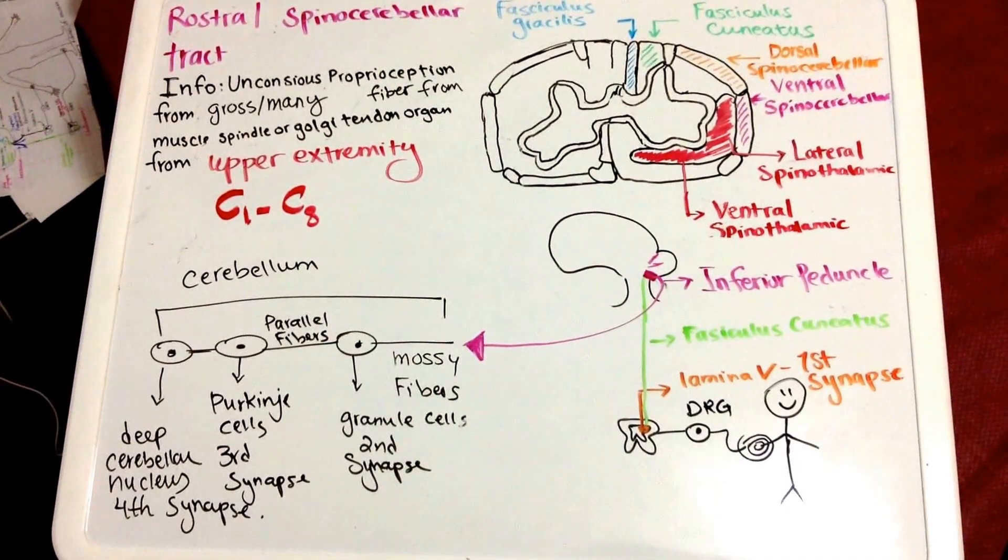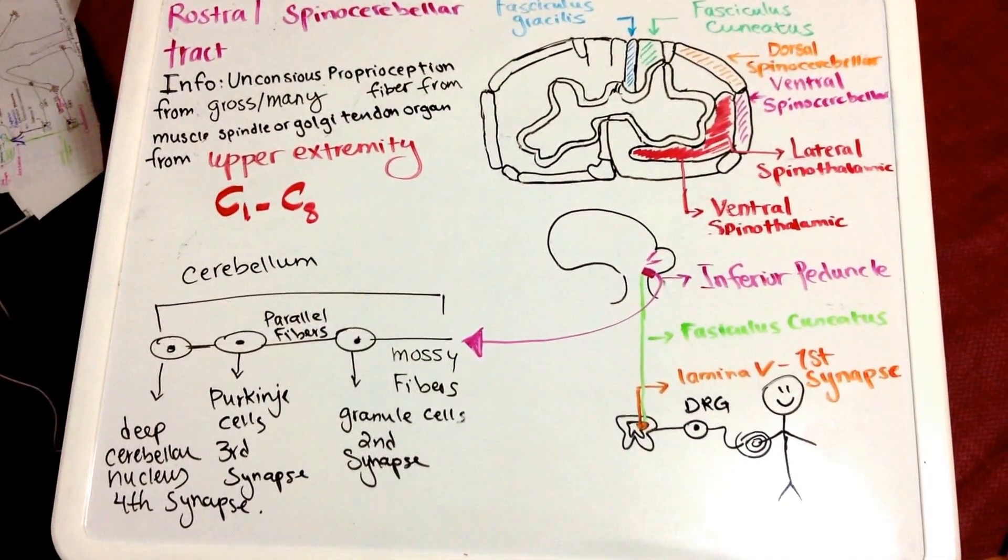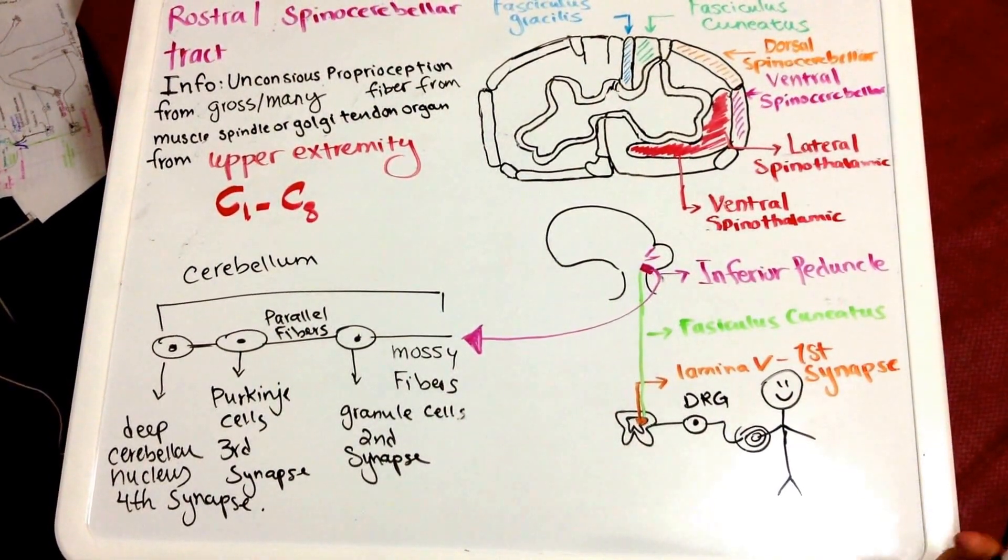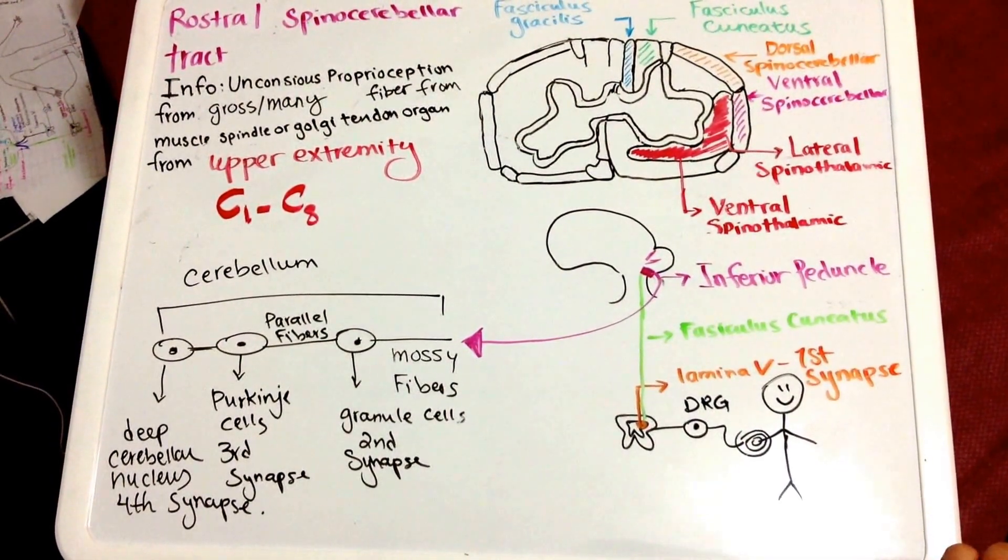Then the information is sent deep to the cerebellum via the axons of Purkinje cells and the last synapse or the fourth synapse is located in the deep cerebellar nucleus.